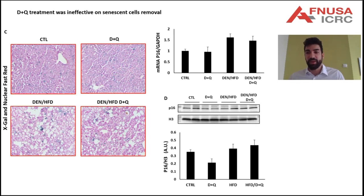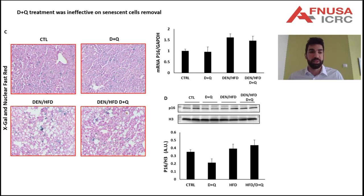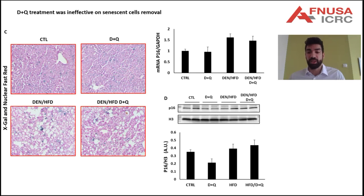The senolytic effect of D plus Q treatment was assessed by senescence-associated beta-galactosidase staining and by gene and protein expression measurement of the senescence marker P16. Contrary to previous studies, the analysis of beta-galactosidase staining images did not reveal any significant difference in senescent-positive cell numbers between treated mice and their controls, as shown in the representative images in panel C. In support of the beta-gal staining, evaluation of P16 gene and protein levels also did not show significant differences among the groups.